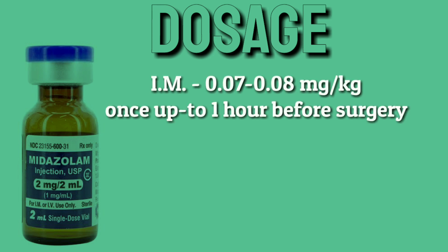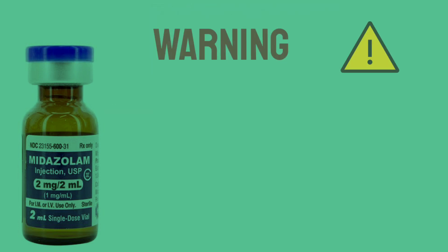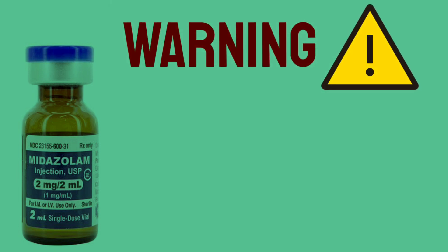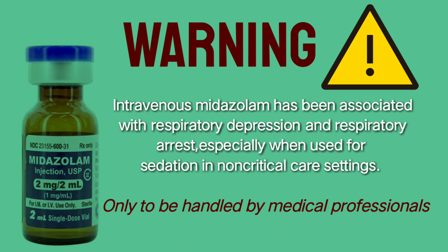Dosage: 0.07 to 0.08 mg per kg once intramuscularly up to 1 hour before surgery, and 1 to 2.5 mg slow IV every 2 minutes as necessary for sedation. Warning: intravenous use has been associated with respiratory depression and respiratory arrest. It should be used only in hospital or ambulatory care settings by professionals.